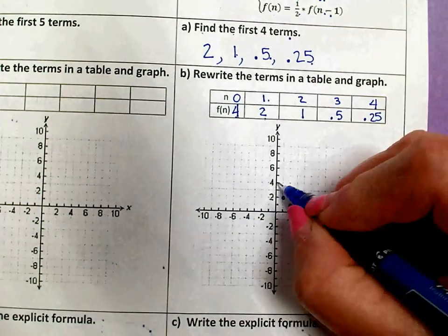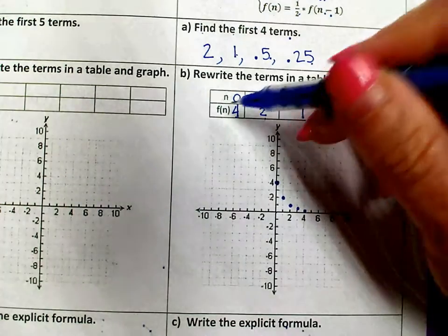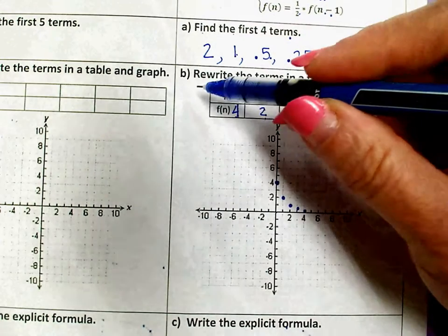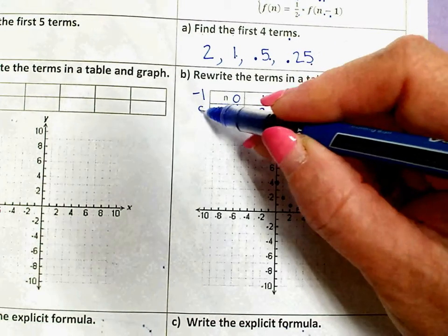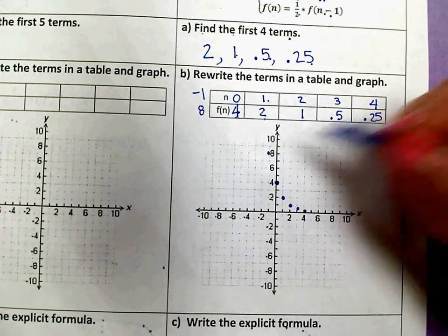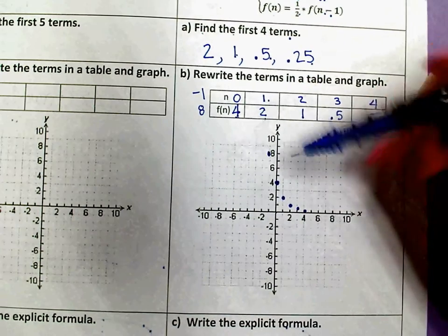And I could do this another point if I needed to. I could figure out at negative 1 that it was twice this amount, which is 8. Just to make sure my graph is exactly where it's supposed to be.